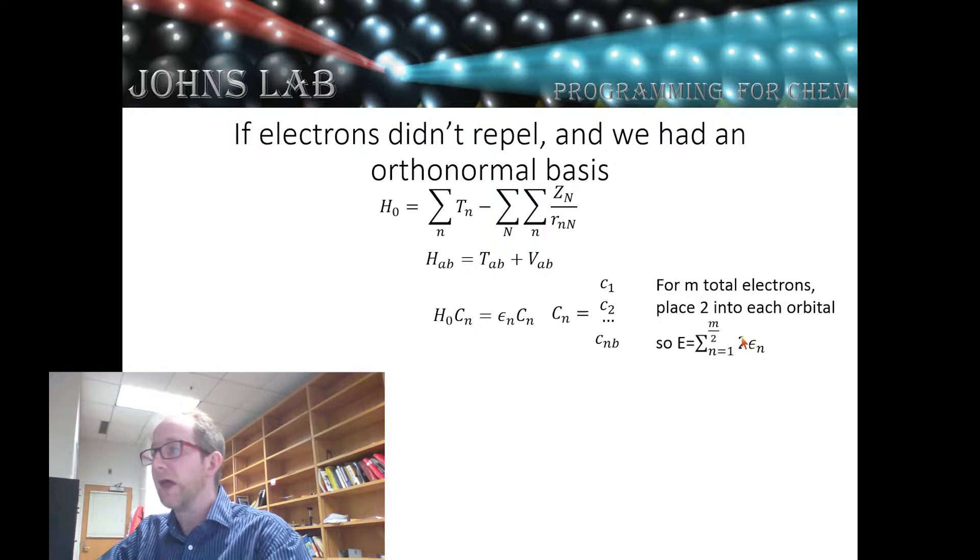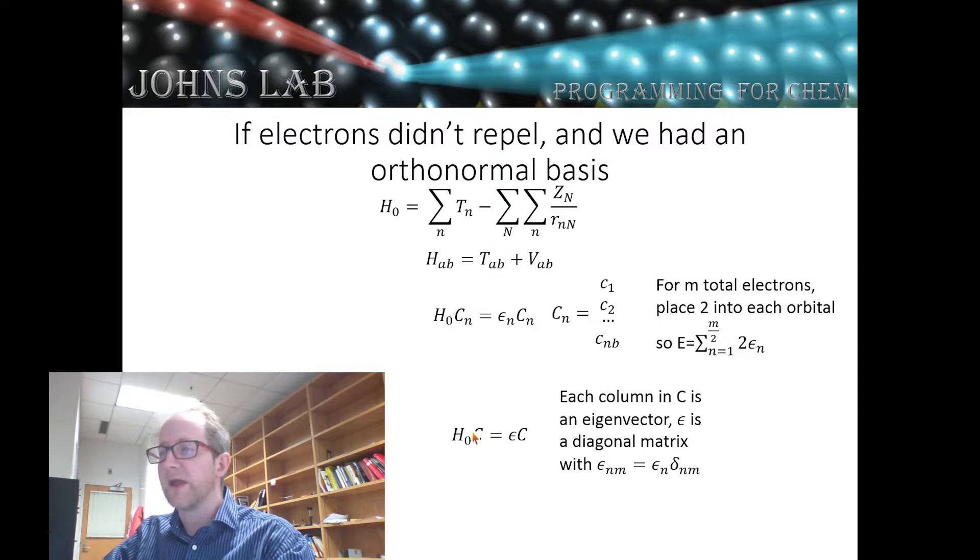And so the total energy would just be the sum of the m over 2 lowest eigenvalues times 2. For example, helium, m would be equal to 2. We would place two electrons in the lowest energy orbital, and that would be our total electronic energy. We can write this in a little bit more compact matrix notation. And so we can write H_0 C equals epsilon C, where C is now a matrix of eigenvectors. So each column in C would be an eigenvector of H_0. And epsilon becomes a diagonal matrix with zero everywhere except for the diagonals.